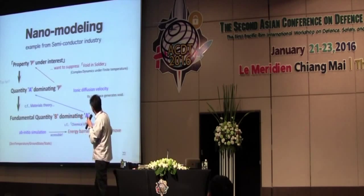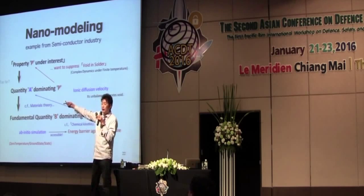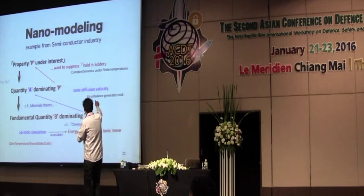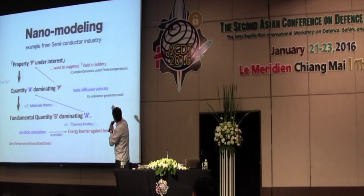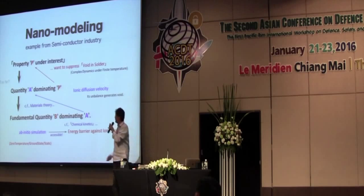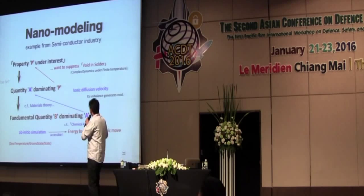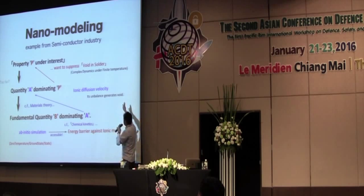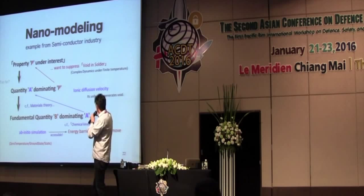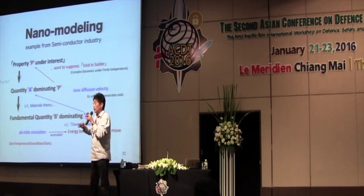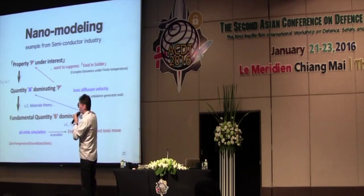Nanomodeling is like this: P is a property under practical interest — in this case, how to suppress voiding in solder. Of course this problem is too far from the ab initio simulation, which only gives zero-temperature ground state results. But we use a step-by-step approach. Quantity A dominates target property P. In this case, the ionic diffusion velocity corresponds to A. If we can evaluate quantity A, then we can somehow work on property P.